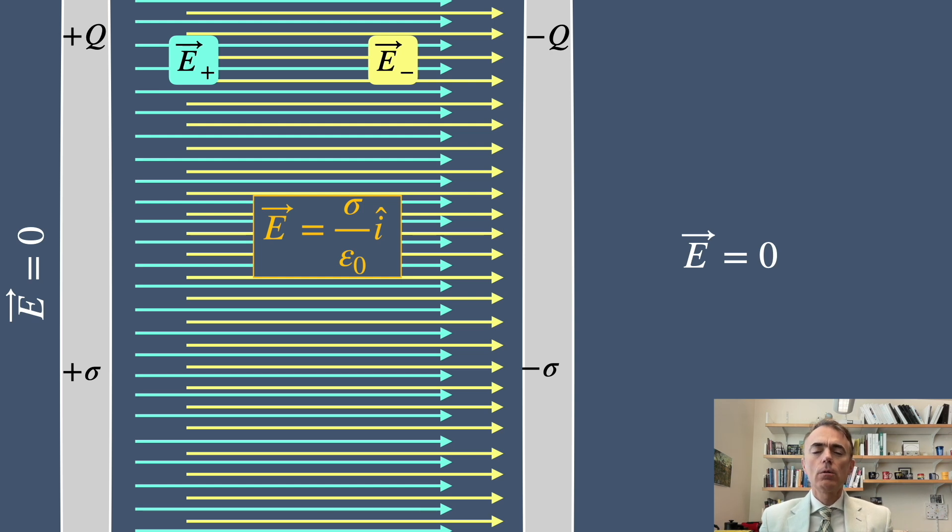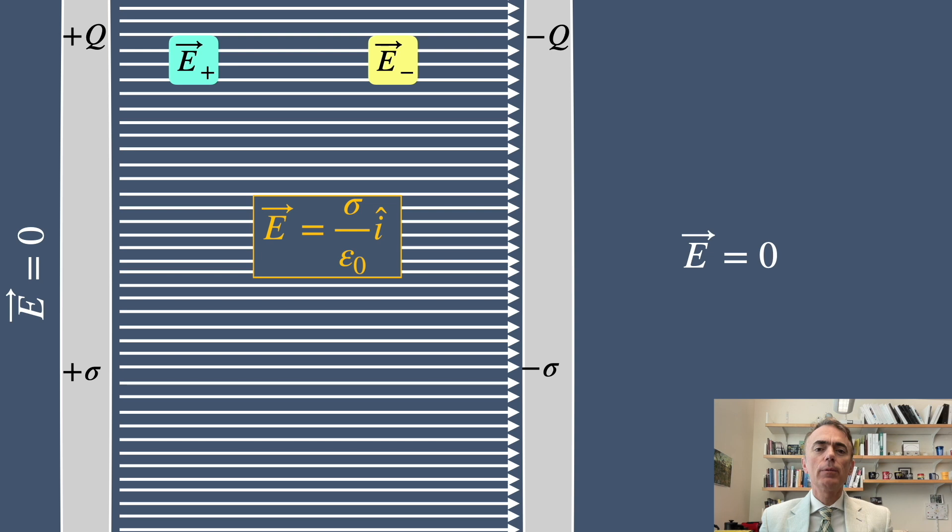This result tells us that the electric field between the plates is uniform and directed from the positive charged plate to the negative charged plate. Unlike the field near the single plate where the field weakens as you move away from the plate, the field between these two plates remains constant.